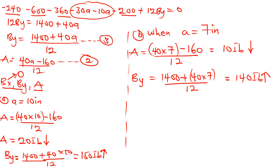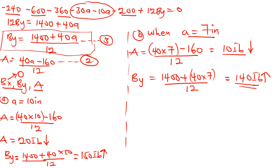You can see that with different dimensions of 'a' we get different reactions. The approach is to first express the reactions in terms of 'a', then substitute the given values — straightforward once you are done. Thank you for watching this episode. Subscribe to the channel, like, and drop your comment. Check out the next episode for the next example.